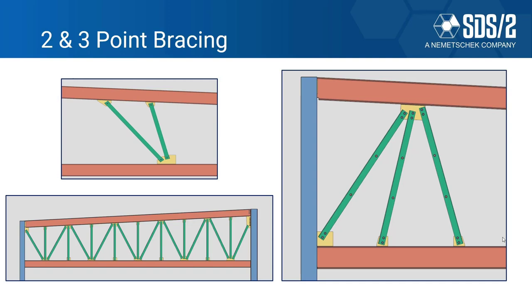SDS 2 supports approximately 150 connection combinations for two and three point bracing to meet your needs. Here the top beam is slanted or sloped, and I'm showing some two and three point examples. The middle brace doesn't necessarily have to be perpendicular — it can be slightly sloped as well.